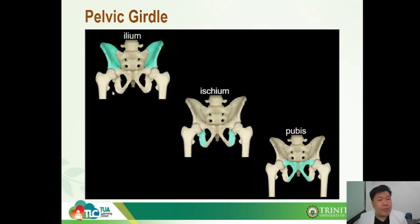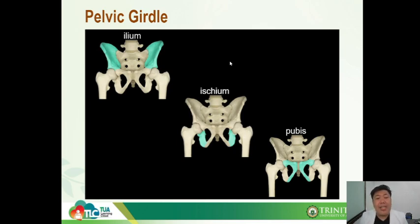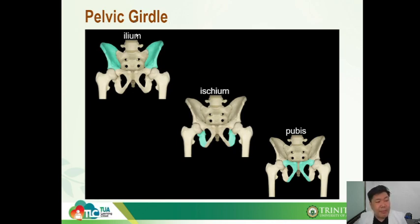The ilium is the most lateral and most superior part of our pelvic girdle — it is the bowl-like wall of the pelvis. The ischium is inferiorly located; it is posterior and lateral. The pubis, on the other hand, is anterior, inferior, and medial. Again, the pelvic bone is composed of three bones: ilium, ischium, and pubis.